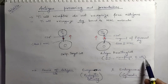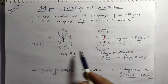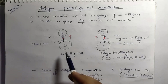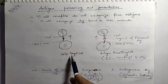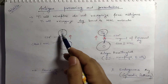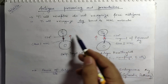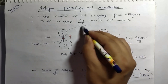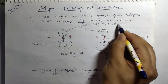Antigen presenting cells are of different types such as dendritic cells, macrophages, or B lymphocytes. These antigens first activate the antigen presenting cells or altered cells, and subsequently stimulate T cytotoxic cells or T helper cells to initiate an immune response, broadly called cell-mediated immune responses.